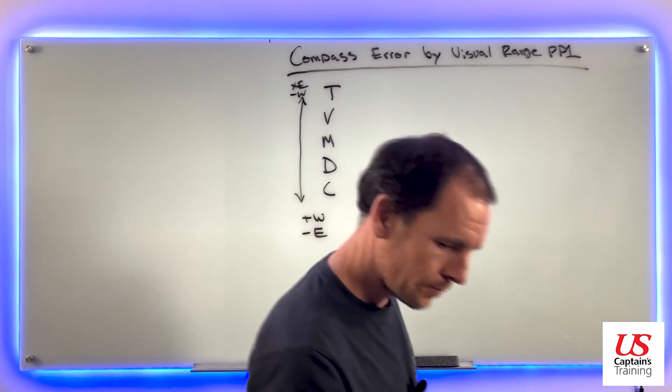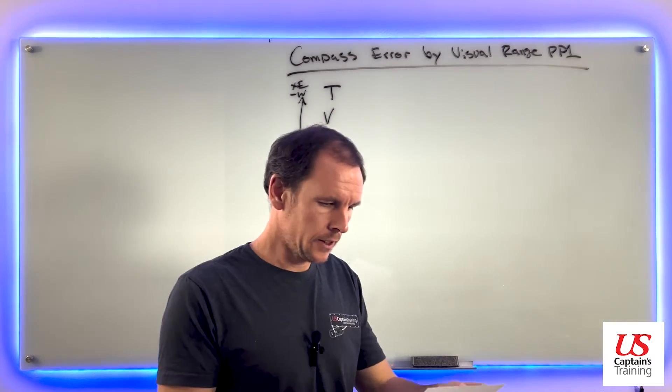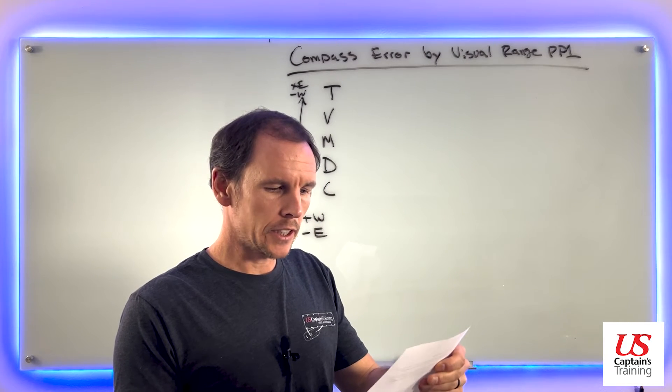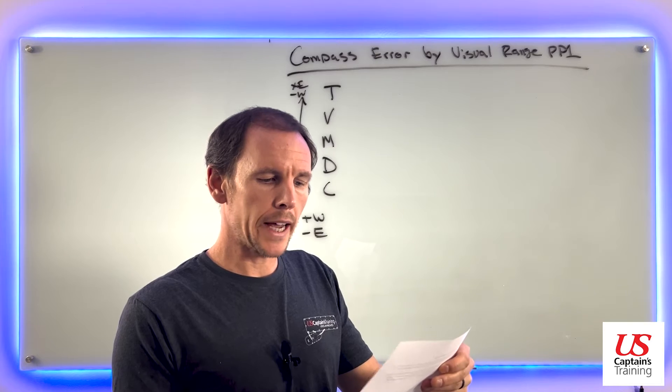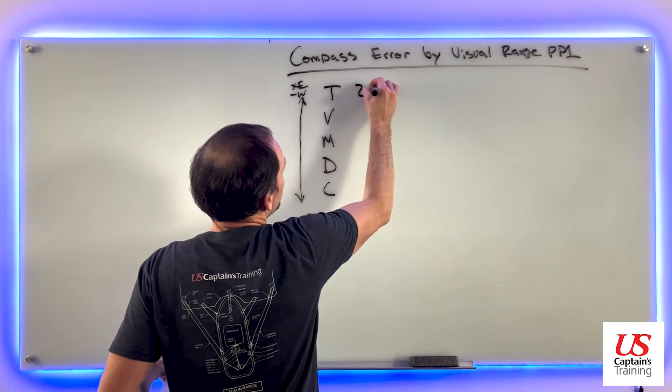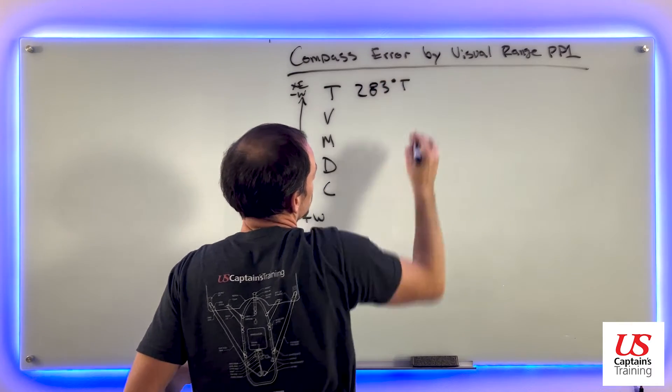Let's get what we need from the problem. It says the chart indicates that the direction of this pair of lights is 283 degrees true.